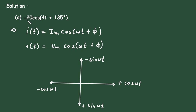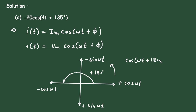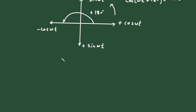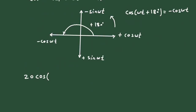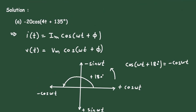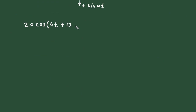We need to convert −cos to +cos — that means moving from −cos to +cos on the unit circle. Moving in that direction, we add 180°, because that is the leading direction. The formula is: cos(ωt + 180°) = −cos(ωt). Applying this, we get 20·cos(4t + 135°).